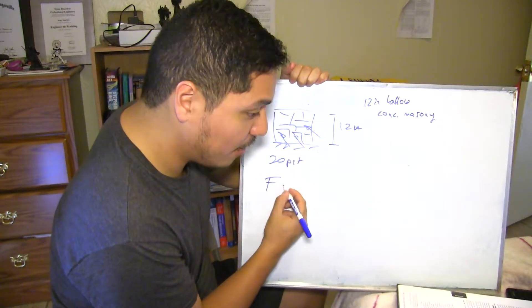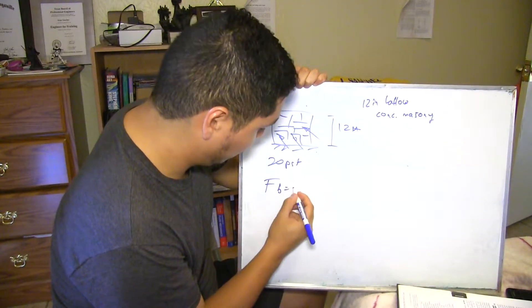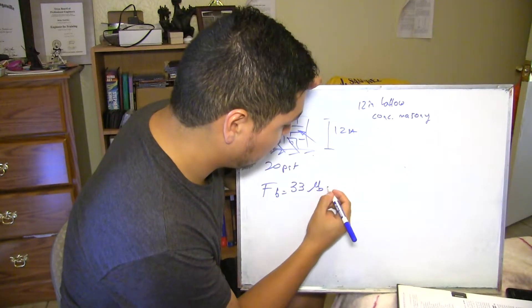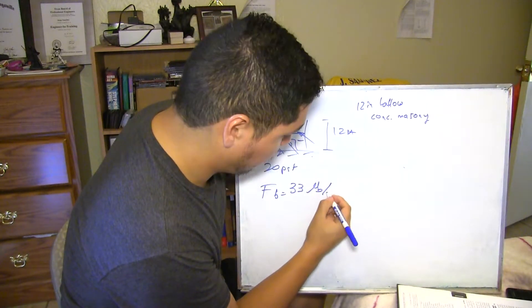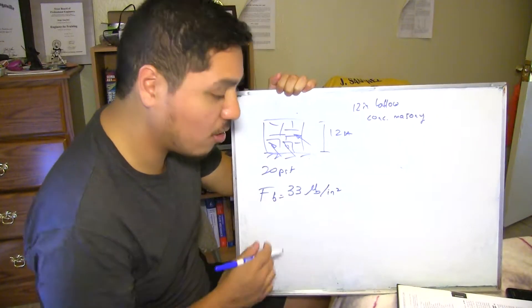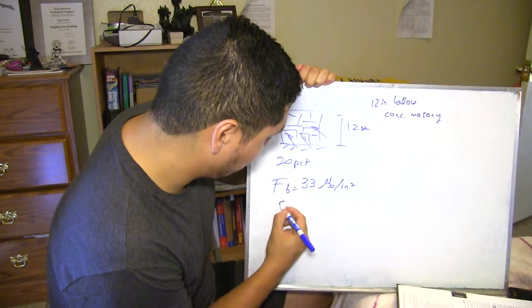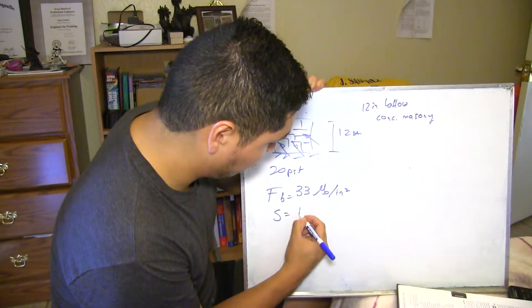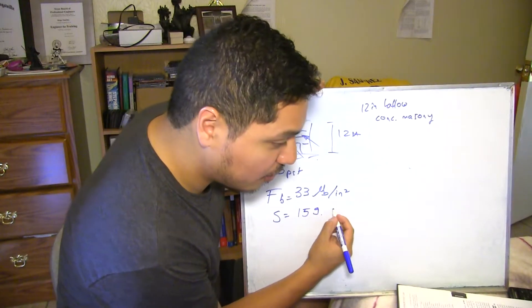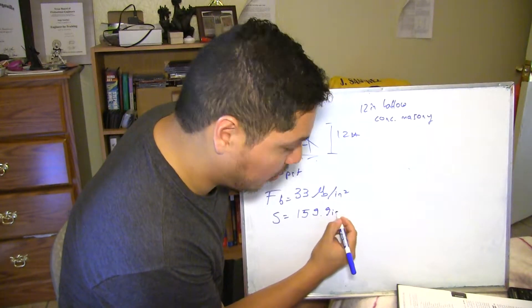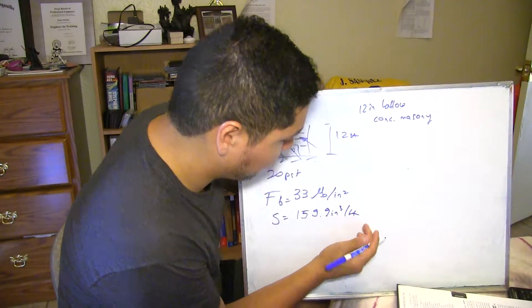And in this case, it's going to be FB is going to be 33 pounds per inch squared. So this is going to be your allowable stress, right? And then you're going to look for your S values too. For the type of masonry that you have, 159.49 cubic inches per foot.